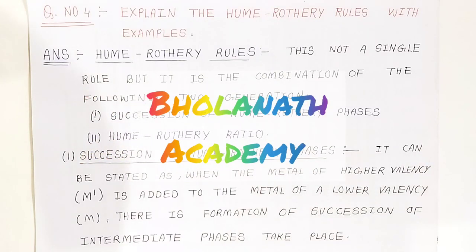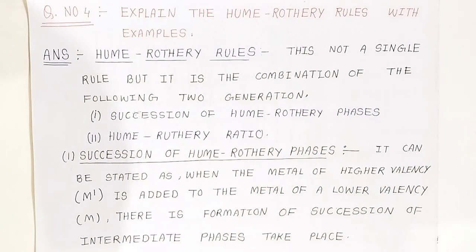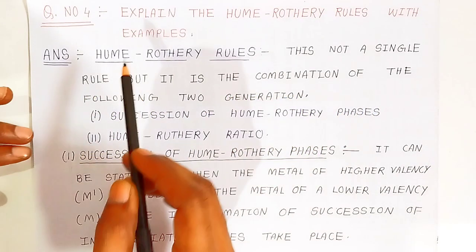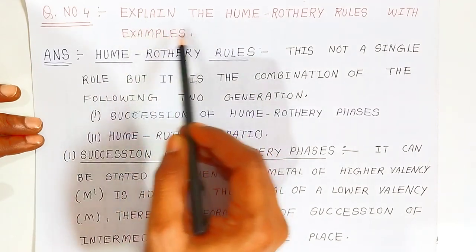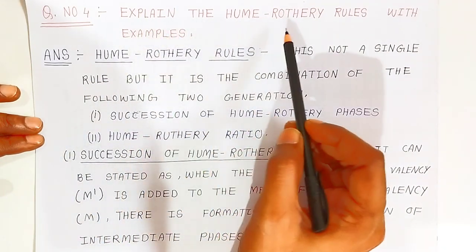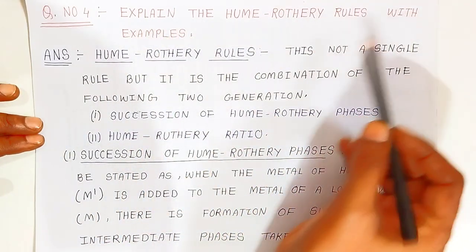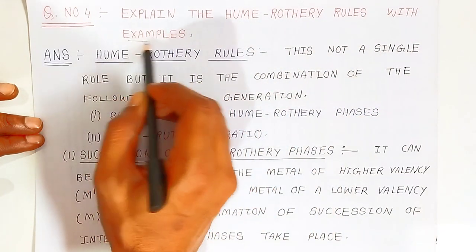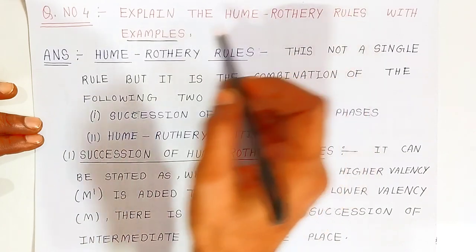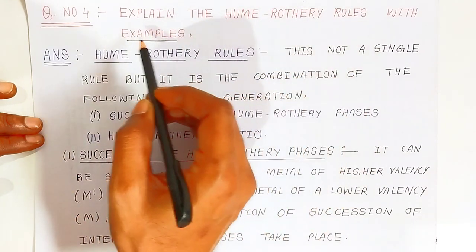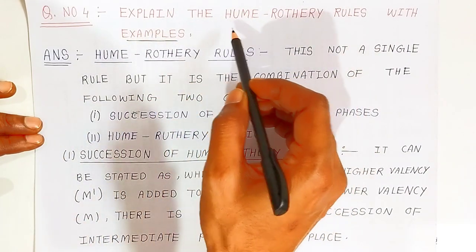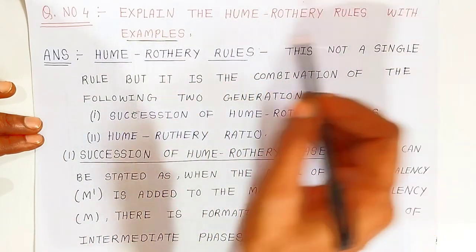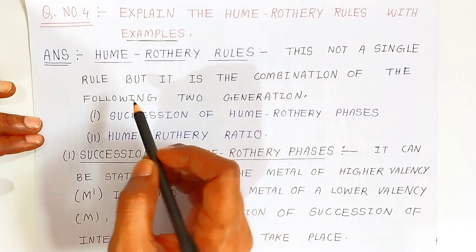Hello students, once again welcome to Bholanath Academy. In this video, we are going to see question number 4. In question number 4, you have to explain the Hume-Rothery rules with examples. Now we are going to explain what Hume-Rothery rules are with the help of examples.